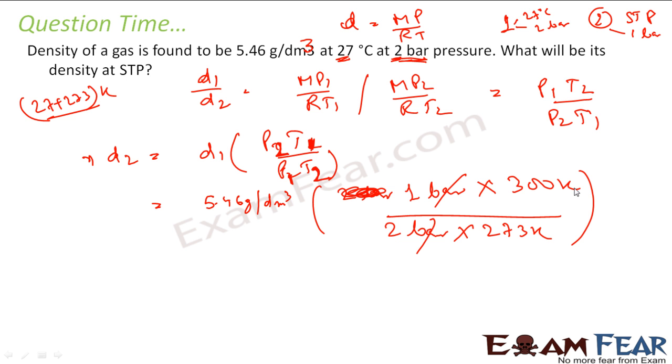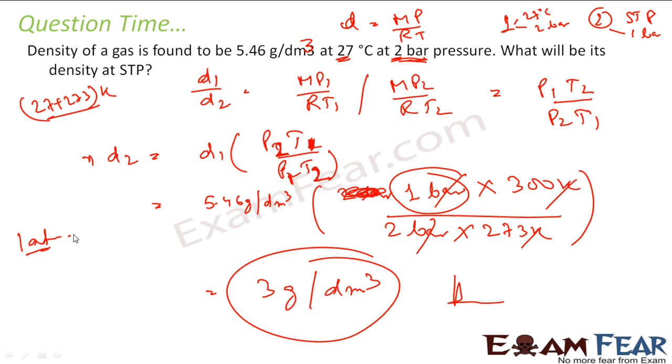So bar cancel, Kelvin cancel, so if you solve this, you get 3 gram per dm³. Note that I have took STP as 1 bar, at least it is not 1 bar, it is 1 atm, that is equal to 0.9 bar or something, but just for the ease of calculation, I took as 1 bar.